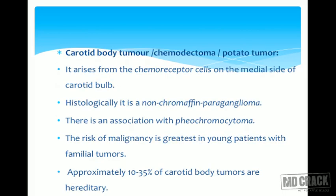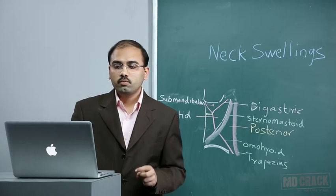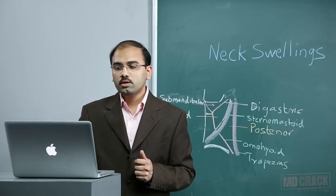Amongst all these swellings, there are a few that can occur anywhere in the neck: sebaceous cyst, lipoma, fibroma, neurofibroma, and hemangioma. We will now see the important swellings in detail, starting with the carotid body tumor.